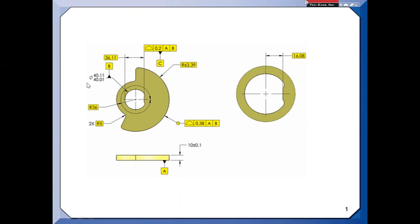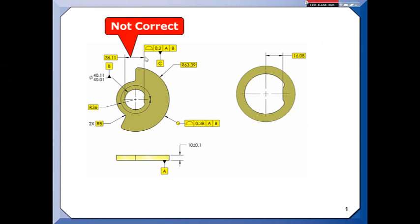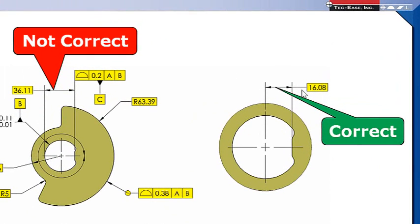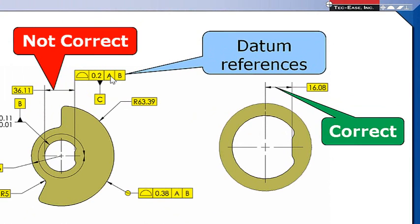That's not really what the drawing says to do, so this is not correct. This would be correct. If we look at the profile tolerance, it tells us that the profile is located with respect to the datums established by features A and B.